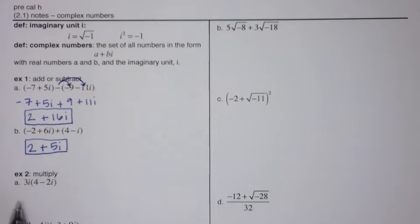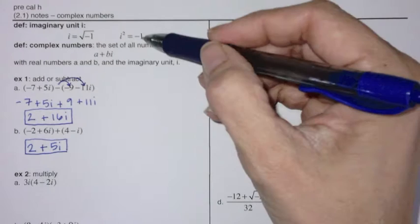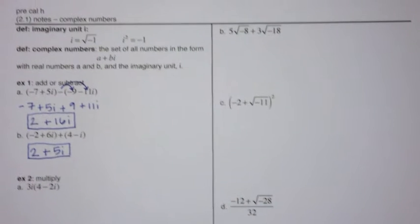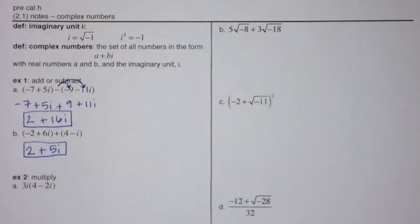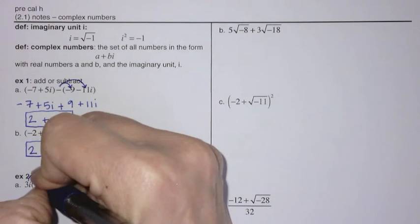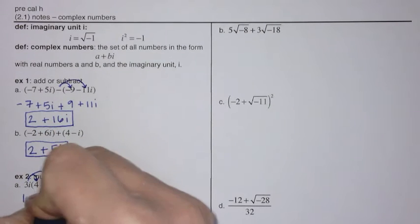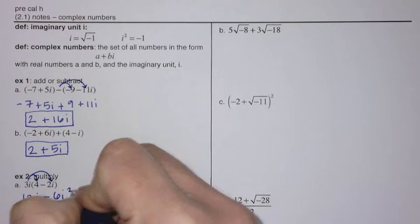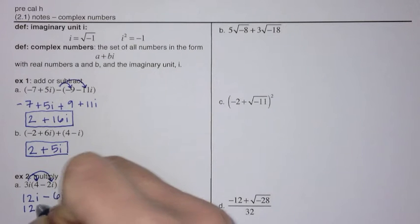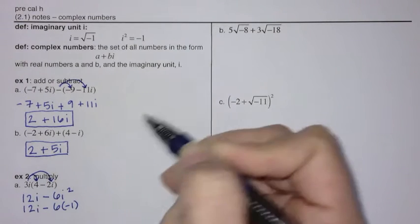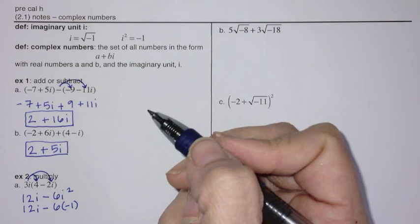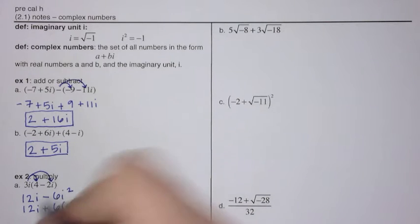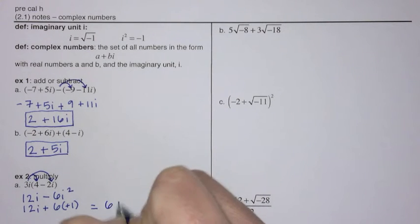Next we're going to get to multiplying, and that's going to bring i squared into play. In math, i squared is written as negative 1 — you don't leave it as i squared. Using the distributive property and paying attention to signs, we get 12i minus 6i squared. Since i squared equals negative 1, that 6i squared becomes negative 6 times negative 1, which changes sign, giving us 6 plus 12i in standard form.